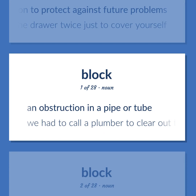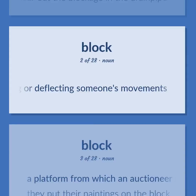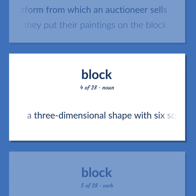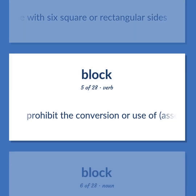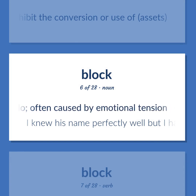An obstruction in a pipe or tube. We had to call a plumber to clear out the blockage in the drainpipe. The act of obstructing or deflecting someone's movements. A platform from which an auctioneer sells. They put their paintings on the block. A three-dimensional shape with six square or rectangular sides. An inability to remember or think of something you normally can do, often caused by emotional tension. I knew his name perfectly well but I had a temporary block.